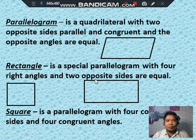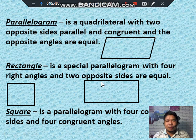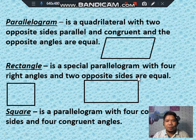A rectangle is a parallelogram with four right angles and two opposite sides that are equal. It has four right angles — 1, 2, 3, and 4 — and two opposite sides that are equal.